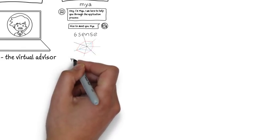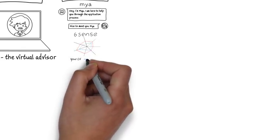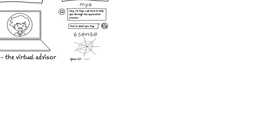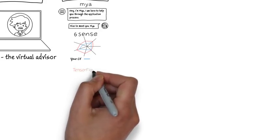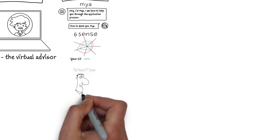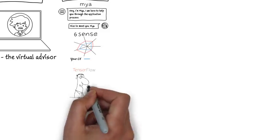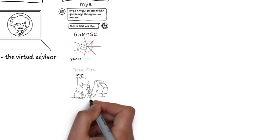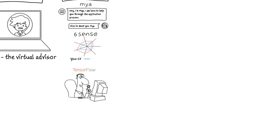Sixth Sense can assess the relevance of a job seeker CV to a job vacancy. It could also provide feedback on where improvements might be made. TensorFlow voice recognition could be used to assist those job seekers with writing difficulties to complete documents or to engage with online chat services.